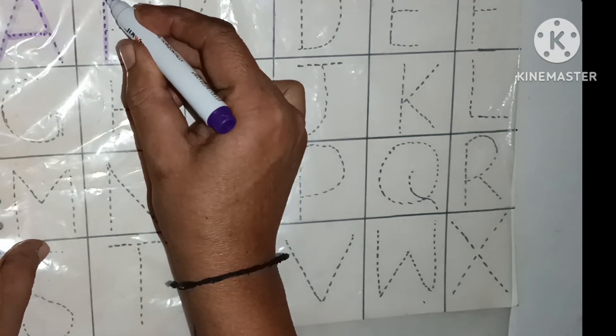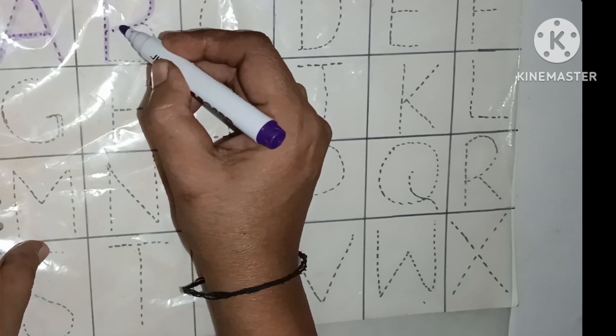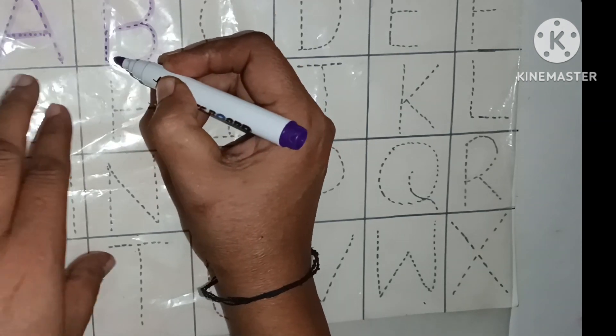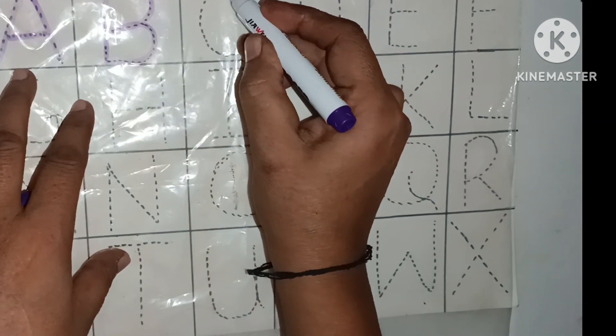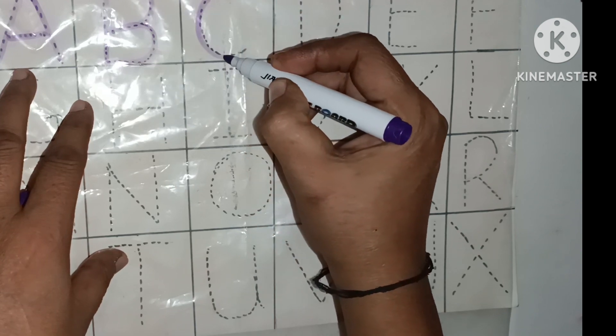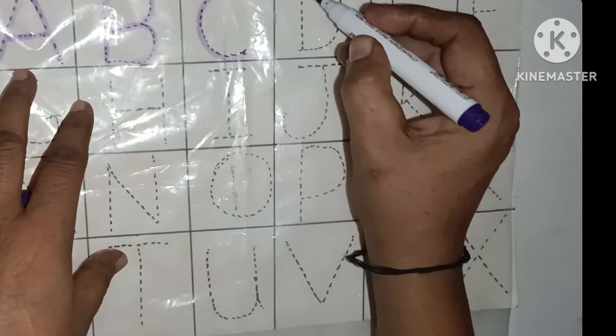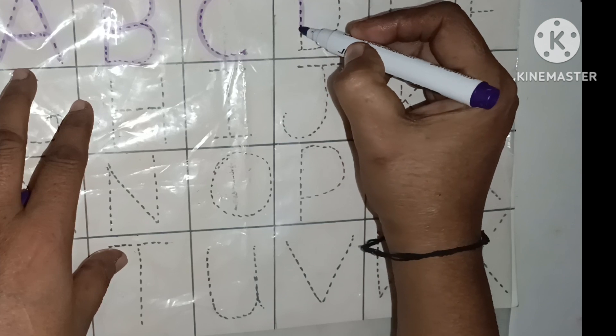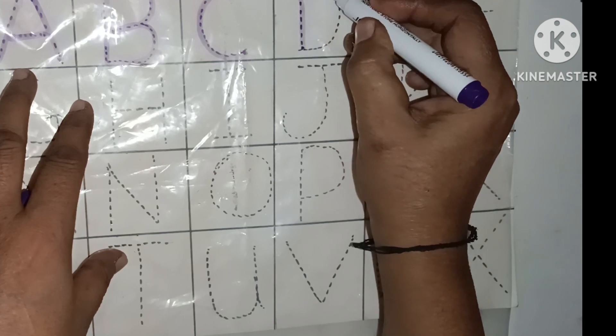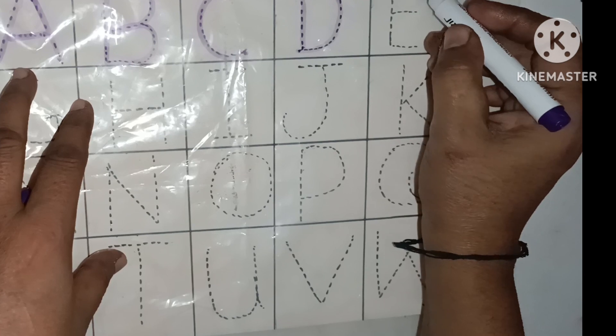B for ball. B for ball. C for cat. C for cat. D for dog. D for dog.